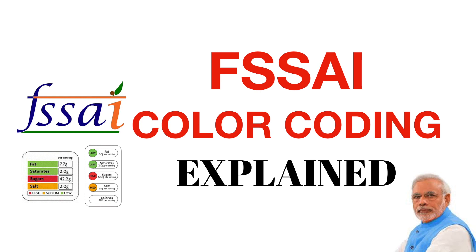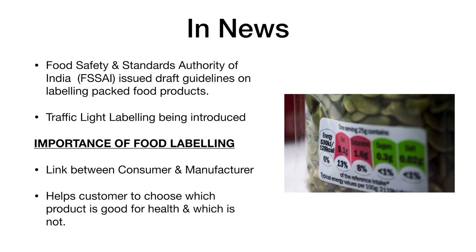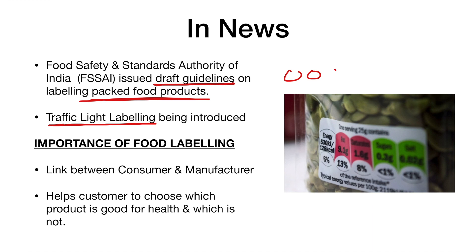Today let us see the recent decision by FSSAI to color code all the food products in India. FSSAI, the Food Safety and Standards Authority of India, issued draft guidelines on labeling food products. FSSAI is planning to implement traffic light labeling, where different color codes like red, orange, and green are used for food products.